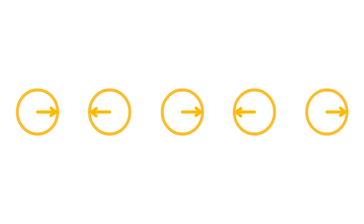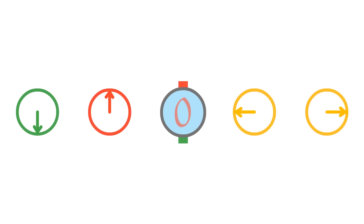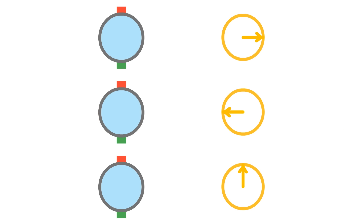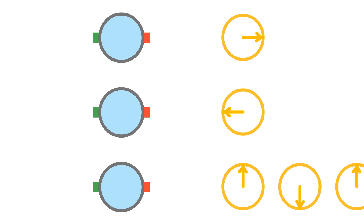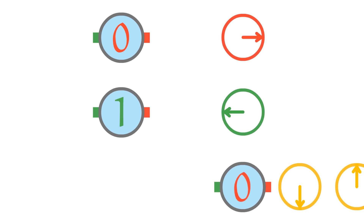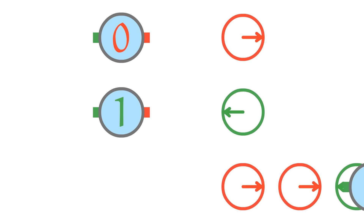If the qubit was in a horizontal state, there's a 50-50 chance of it being measured as 0 or 1. But if we wanted, we could have measured it horizontally. In this case, this would be a 0, this would be a 1, and these would be 50-50 chances.